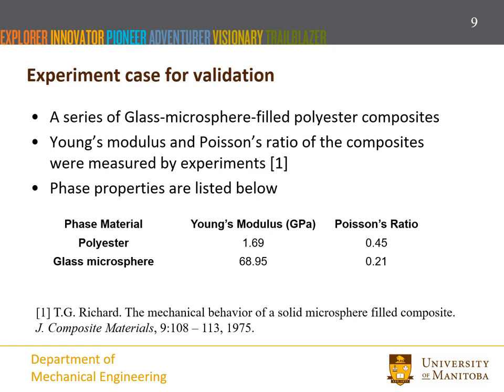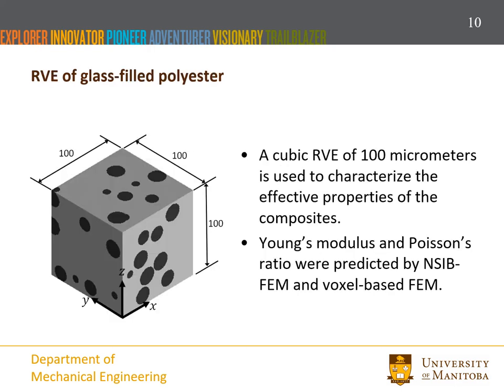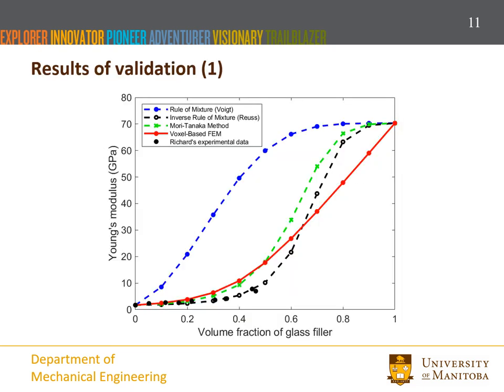We used an experimental case for the validation. The composites are a series of glass microsphere filled polyester with different volume fractions of polyester and glass. The Young's modulus and Poisson's ratios of the composites were measured by experiments, and the phase material properties are available for finite element modeling. A cubic representative volume element of the composites was used. The Young's modulus and Poisson's ratio were predicted by non-segmentation image-based finite element modeling and the voxel-based finite element modeling, which is accurate for capturing material heterogeneity.